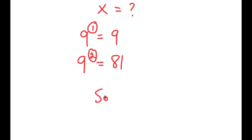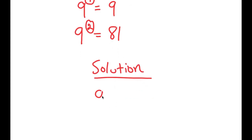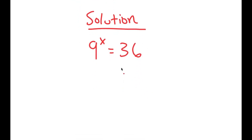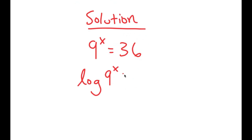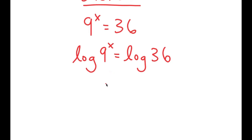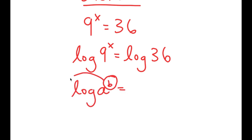We want to find the exact value of x. To do that, I'm first going to take the log on both sides. So I get log of 9 to the power of x is equal to log 36. The reason I used logarithms is because they have a special property that states that if I have something in the form log a to the power of b, I can move this exponent b to the front, so this turns into b times log a.